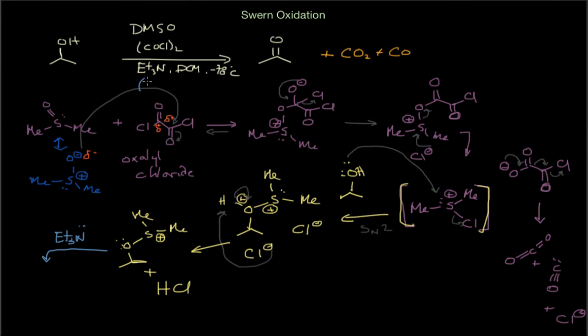So there's the first equivalent of base. So you have at least two equivalents of your base. Now the first equivalent will come in and quench the salt and will lead to the sulfonium.